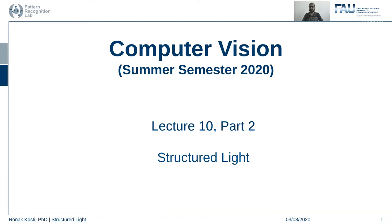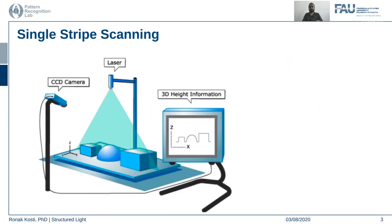Hello everyone and welcome back to the computer vision lecture series. This is lecture 10 part 2. We continue talking about the basic concepts of structured light. Last time we saw that for generating depth maps using structured light concepts, we already know the geometric arrangement of the camera and the source of the structured light, and we have already seen the algorithms which can compute correspondences using this information.